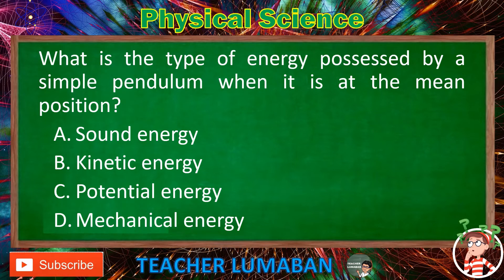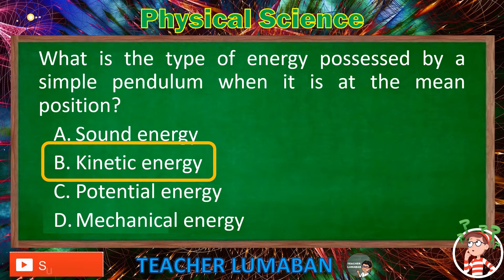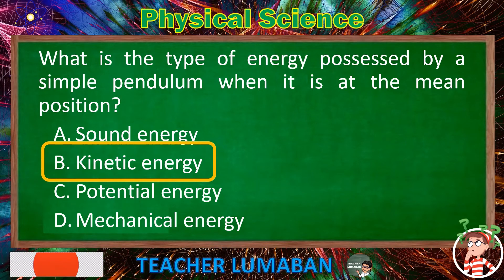The correct answer is letter B — Kinetic energy. Kinetic energy is the type of energy possessed by a simple pendulum when it is at the mean position.